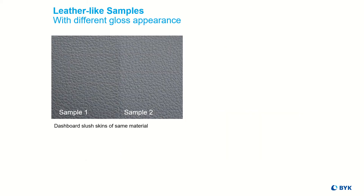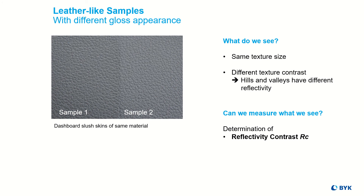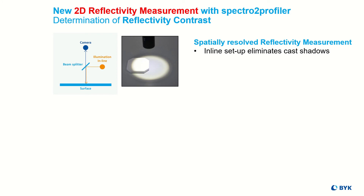Leather-like surfaces can also have a different gloss appearance. The two slush skins are made of the same material and have the same grain, but differences can be seen in the texture contrast. Sample 2 appears shallower than sample 1. For objective measurements, Spectro 2 Profiler determines the reflectivity contrast.